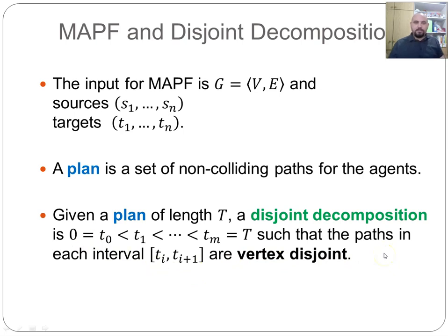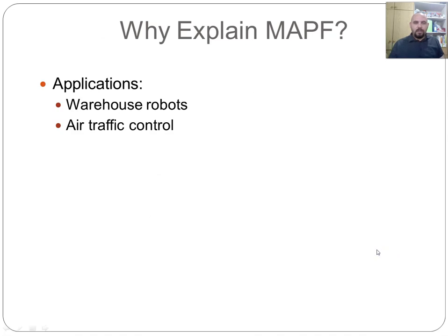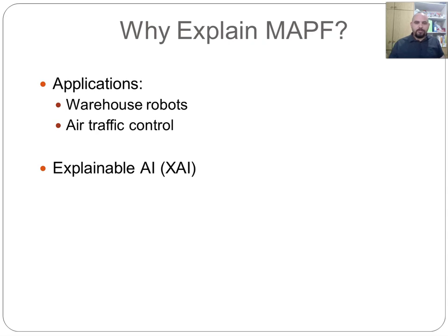Why do we need to explain these plans? There are some applications for this—for example, in warehouse robots and also in air traffic control, where the controllers actually direct each plane with human oversight. So if the human sees a plan, they need to be very convinced that the plan actually works before they give directions to the airplanes. And if we want to optimize that, we need somehow to explain to the humans that the plans we devise are correct. There is also a strong relation to explainable AI, XAI.